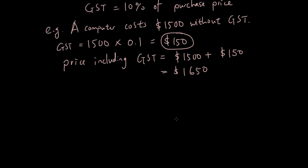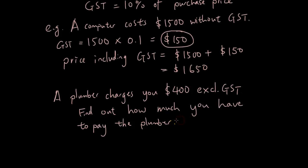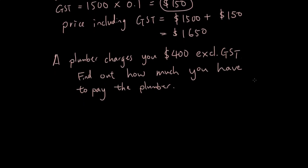So let's do another example. Now this is a real-life example. It actually literally just happened to me a few weeks ago. A plumber charges you $400 excluding GST. Now the plumber actually told me the price excluding GST. So they didn't tell me initially that the price was excluding GST. I had to find out later. So how much do you actually have to pay the plumber including GST?